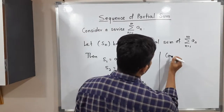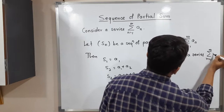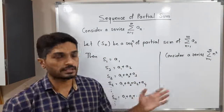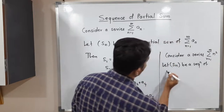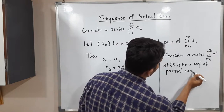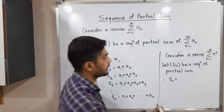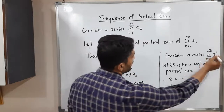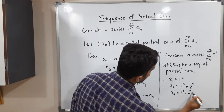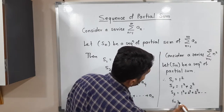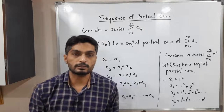Consider a series: summation n running from 1 to infinity of n². Let Sn be the sequence of partial sums of this series. Then S1 is the first term only, which is 1². S2 is the sum of the first 2 terms: 1² plus 2². S3 is the sum of the first 3 terms: 1² plus 2² plus 3², and so on. In general, Sn equals 1² plus 2² plus and so on up to n². So for each series, we have a sequence of partial sums.